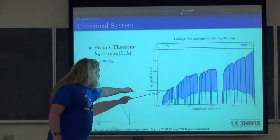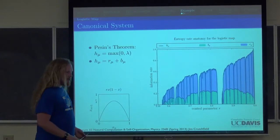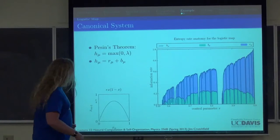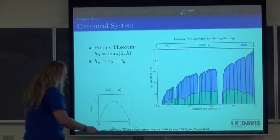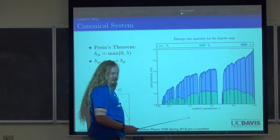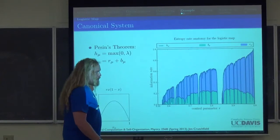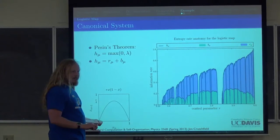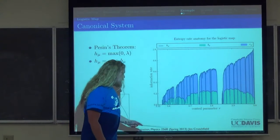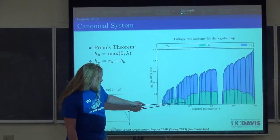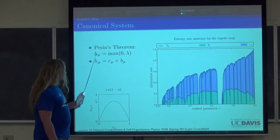Since h_μ = r_μ + b_μ, the logistic map's Lyapunov exponent also decomposes into r_μ and b_μ. There's some non-trivial behavior: at certain locations — the band mergings — b_μ appears to go to zero, and the entropy rate is just equal to r_μ. This tells us how much of the observed dynamics is ephemeral (noisy) and how much is correlated behavior indicative of intrinsic internal computation.